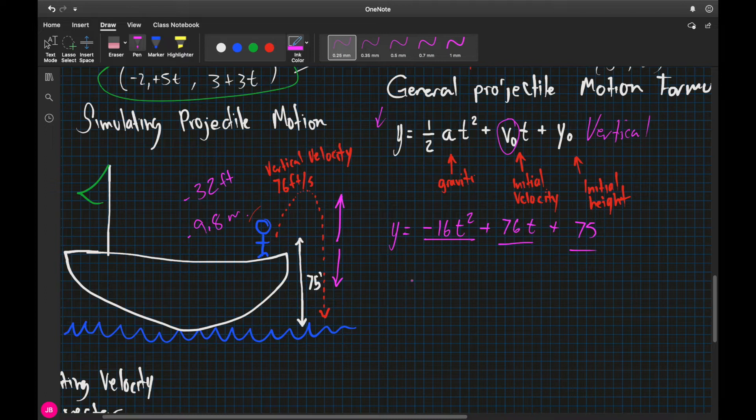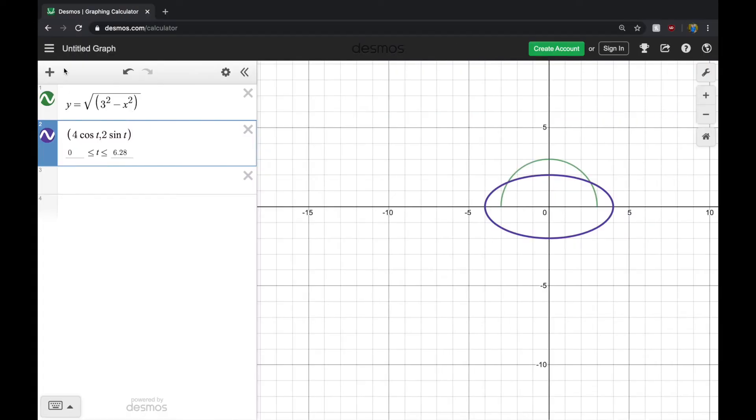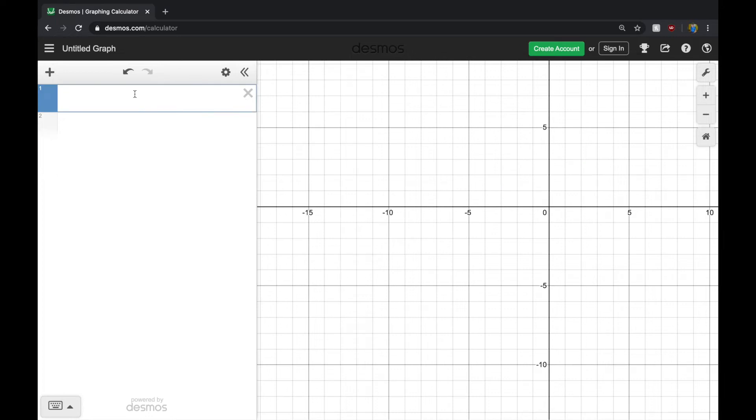So if we were to plug this in, and we needed to have an X, we would just say that X is equivalent to T, just so that we have something. And if we go to Desmos, we can map out the flare's flight path.